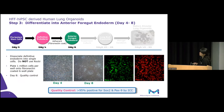Once you can be assured the cells express the correct markers, if for whatever reason you do not get that high percentage of definitive endoderm markers, we recommend that you go back to the pluripotent stem cell state, clean up your iPSC culture to get rid of any spontaneously differentiated cells, and start over. Assuming you have high percentages of definitive endoderm markers, you're now ready to proceed to the next step. At this step, you dissociate your definitive endoderm into single cells and plate them at one million cells per well onto a fibronectin-coated six-well plate.